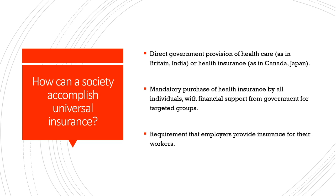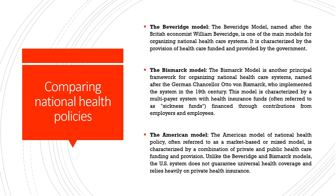We must study three typologies of national health systems prevalent in most modern nations. These are the Beveridge model, the Bismarck model, and the American model. All countries take some aspects of each, and many mixed models exist today. The Beveridge model, named after British economist William Beveridge, is characterized by healthcare funded and provided by the government. The Bismarck model, named after German Chancellor Otto von Bismarck who implemented it in 19th-century Germany, features a multi-payer system with sickness funds financed through employer and employee contributions.